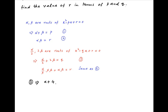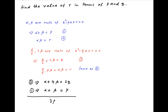Result 3 implies that alpha plus 4 beta is equal to 2q, and result 1 is alpha plus beta is equal to p. Subtracting, we get 3 beta is equal to 2q minus p, and therefore beta is equal to 2q minus p upon 3.